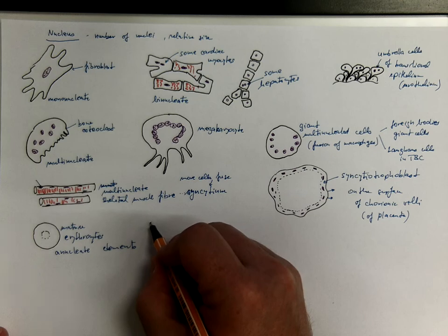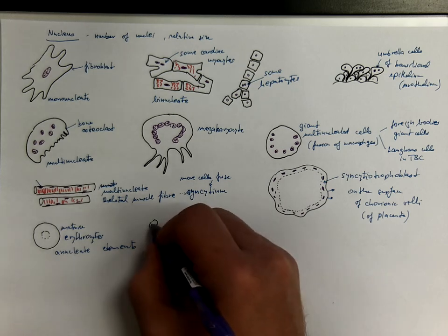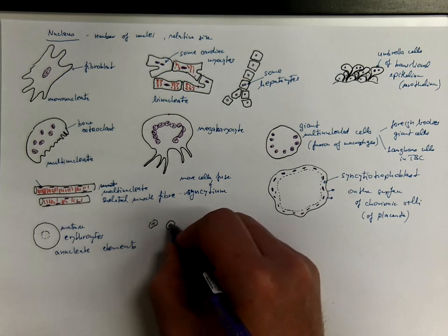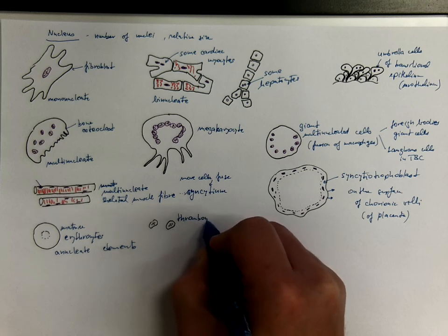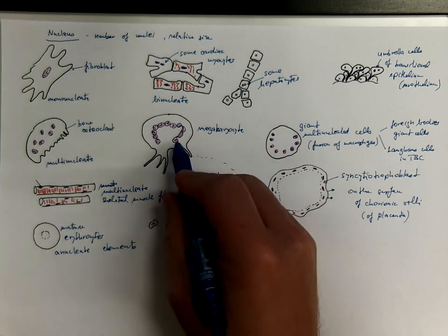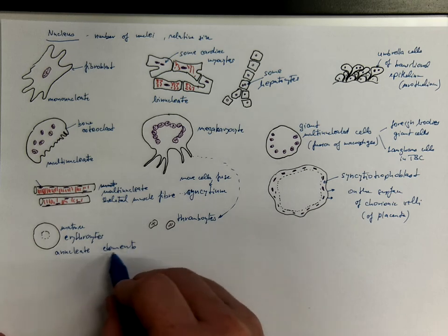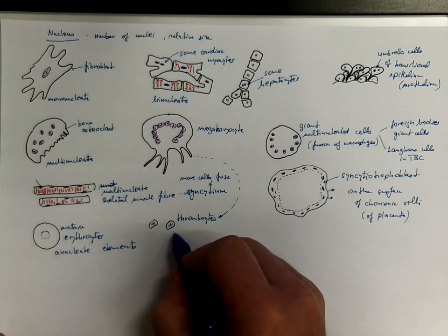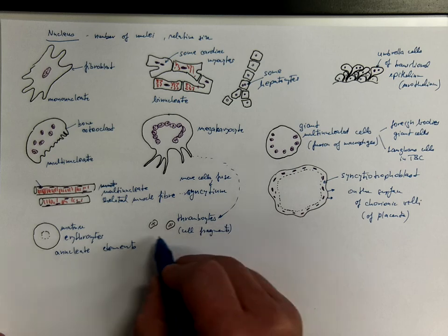Similarly, if speaking about blood, you will find some small elements that have some granules in the center. Here, these would be thrombocytes, so blood platelets or thrombocytes, which are actually fragments of these mother cells, megakaryocytes. But this structure inside is not a cell nucleus, these are only granules. So, these are also enucleate elements or cell fragments.